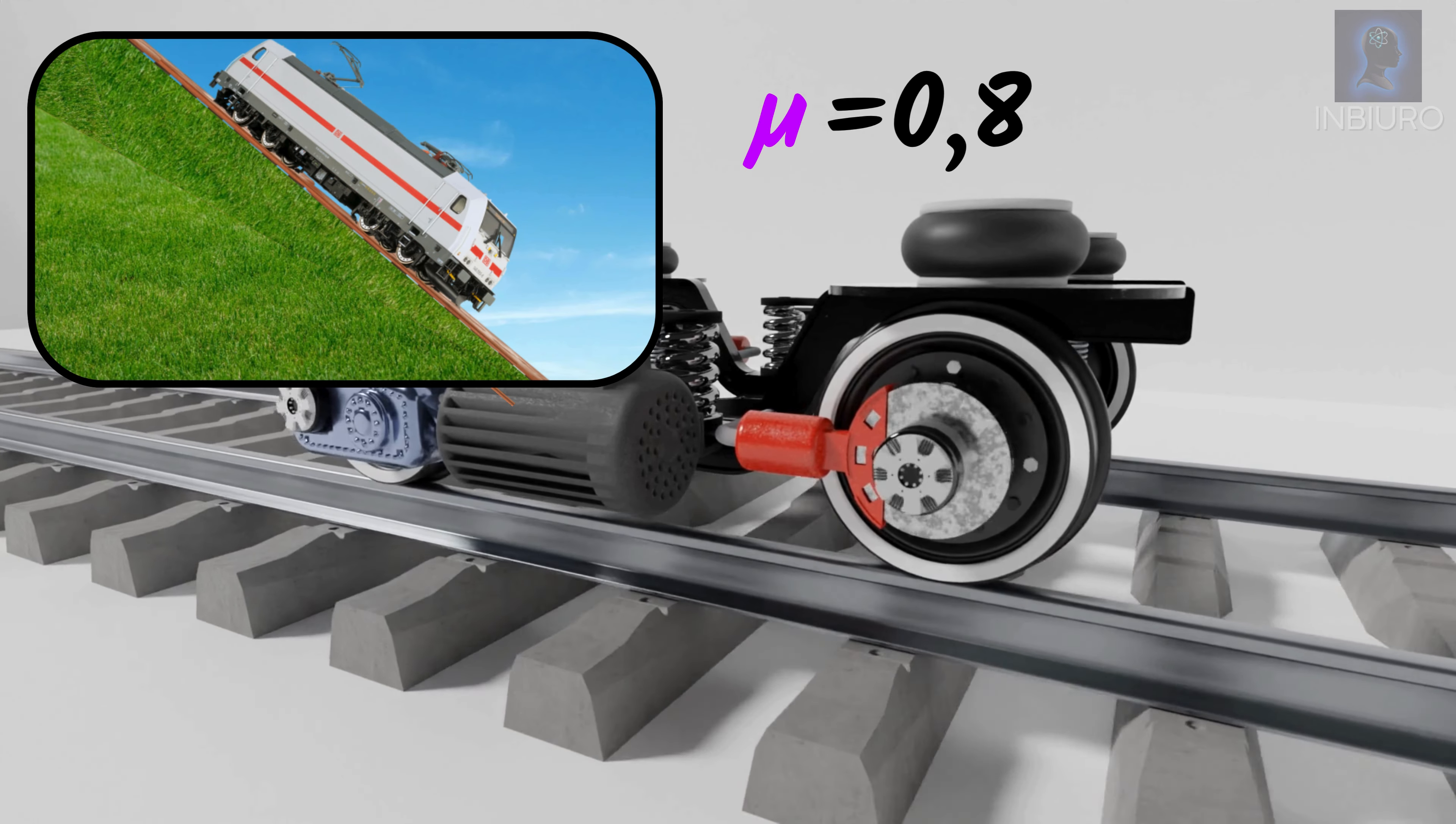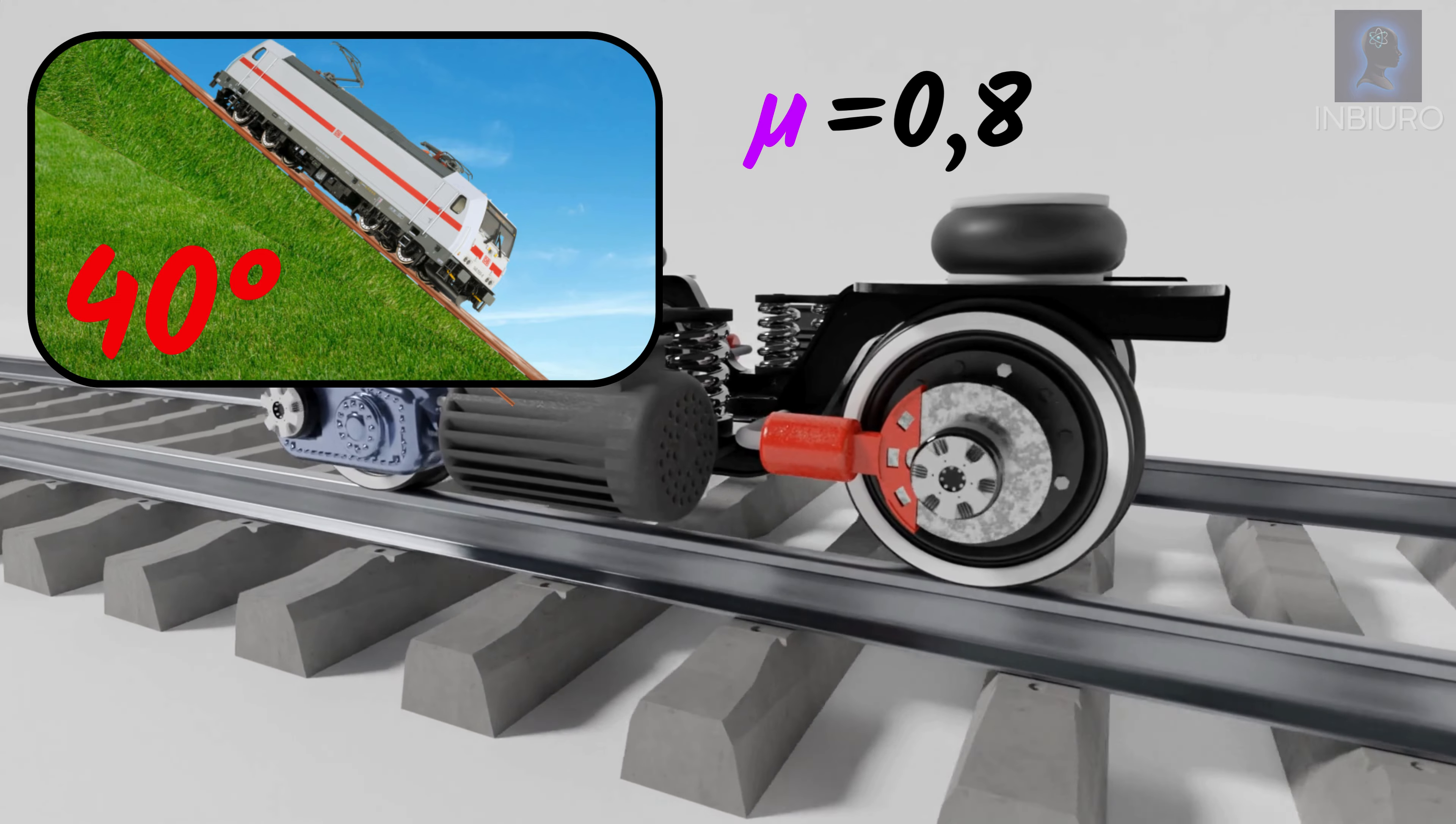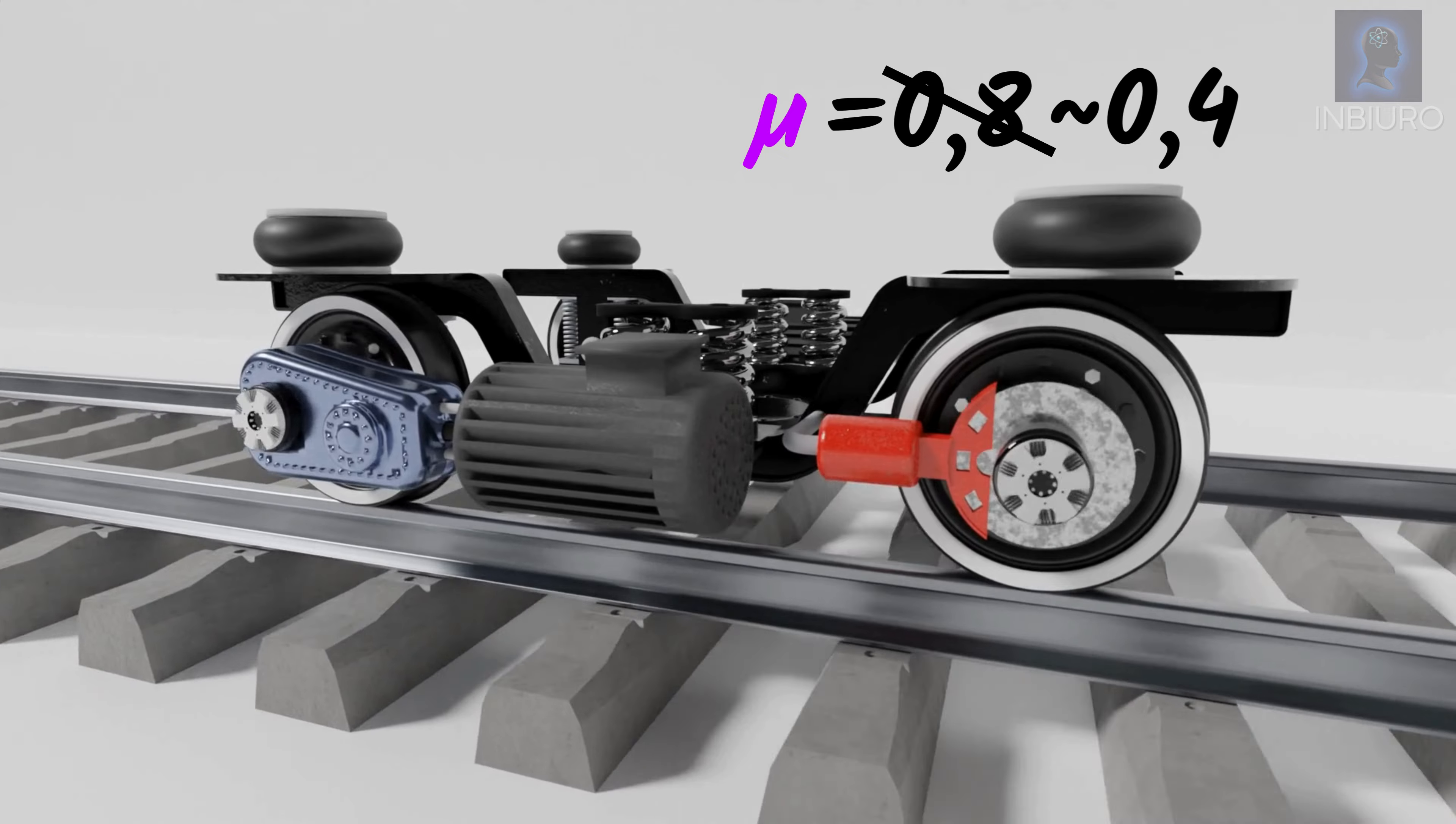Imagine the train would be capable to drive 40 degrees uphill if it had all wheels drive and no cars to tow. In real conditions the friction coefficient is around 0.4 on the wet and dirty track.